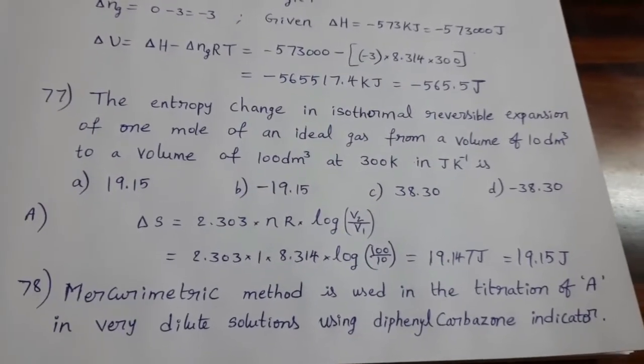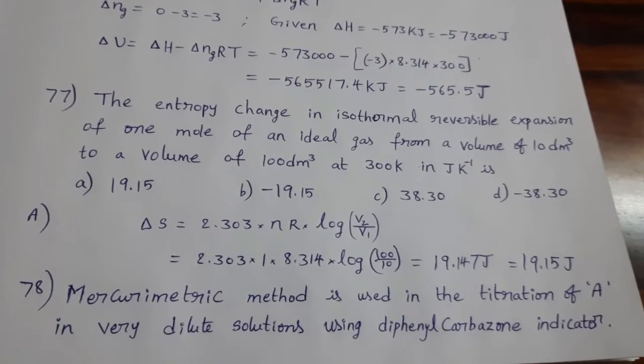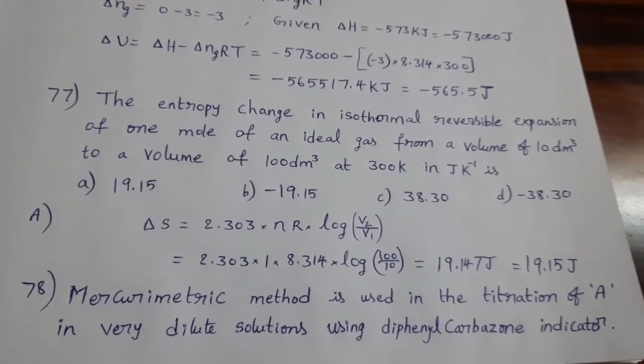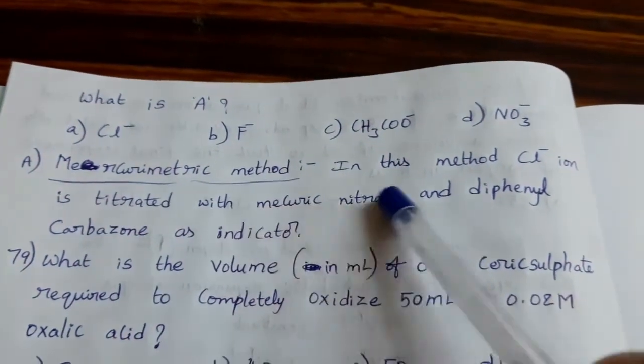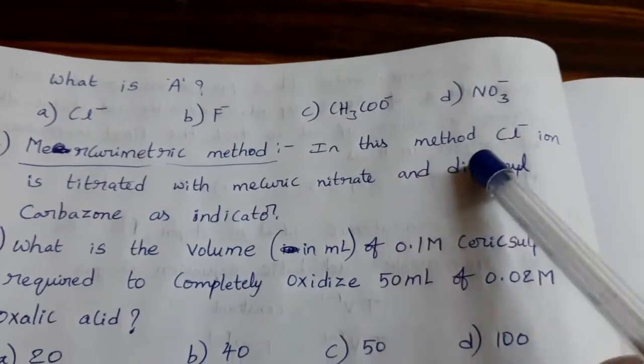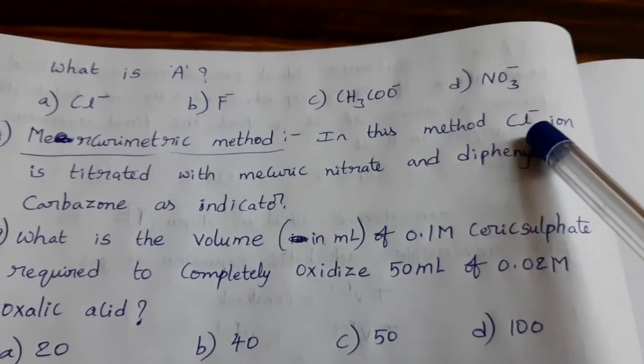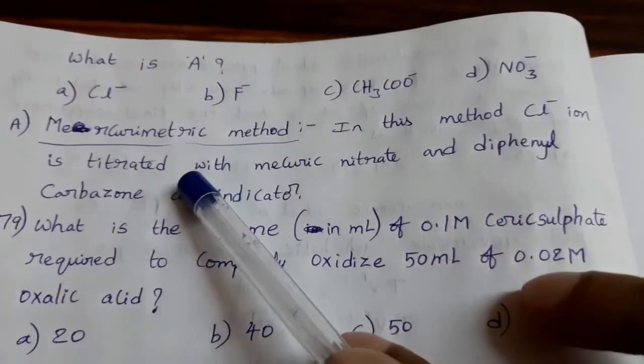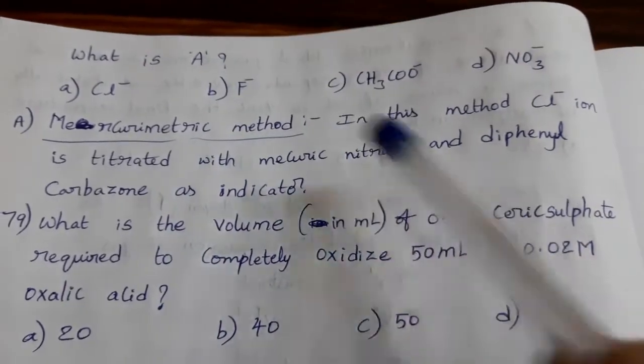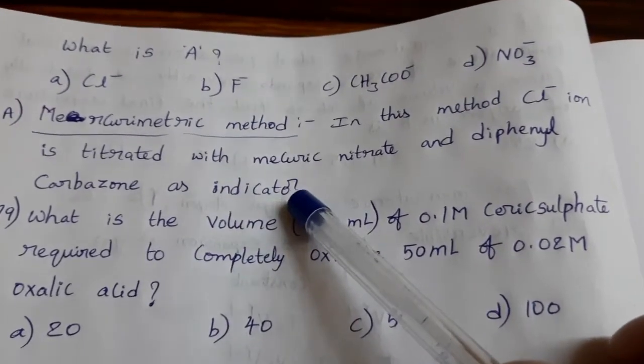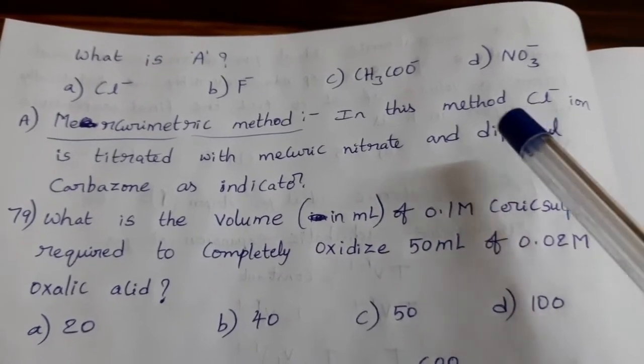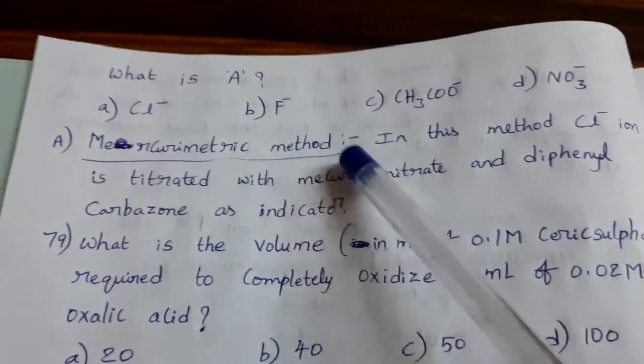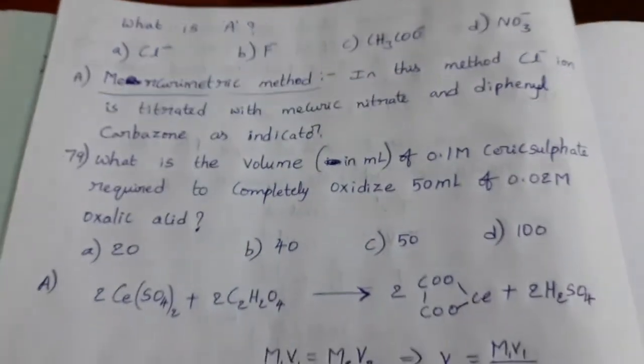Mercury metric method is used in the titration of A in very dilute solutions using diphenyl carbazone indicator. What is A? Mercury metric method is used to identify the Cl-. In this method, Cl- ion chloride ion is titrated with mercuric nitrate and diphenyl carbazone as indicator. In the given sample, Cl- ion is present or not we can identify by using this mercury metric method. Option A is the answer.